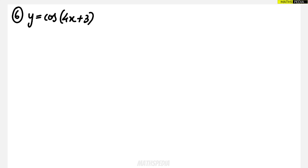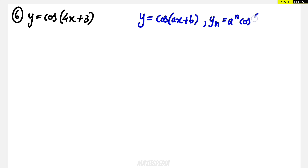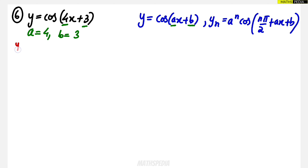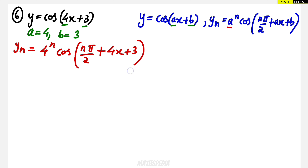The sixth question is y = cos(4x+3). We use the formula for y = cos(ax+b), where the nth derivative is a^n · cos(nπ/2 + ax + b). Comparing, a = 4 and b = 3. So the nth derivative is 4^n · cos(nπ/2 + 4x + 3). This is the answer for the given problem.